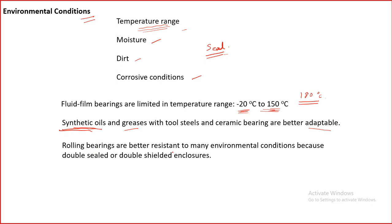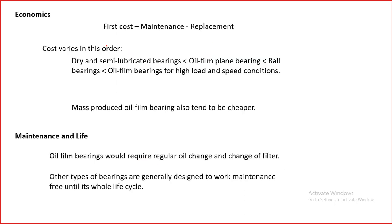Synthetic oils have higher temperature tolerance and are preferred nowadays, although they are almost four times more expensive than normal hydrocarbon or petroleum-based lubricating oils. Rolling bearings are better resistant to many environmental conditions because of double sealed or double shielded enclosures — it all depends on how well the bearing has been sealed to protect it from outside environment. The final requirement for bearing selection is economics: first cost, maintenance, and replacement.